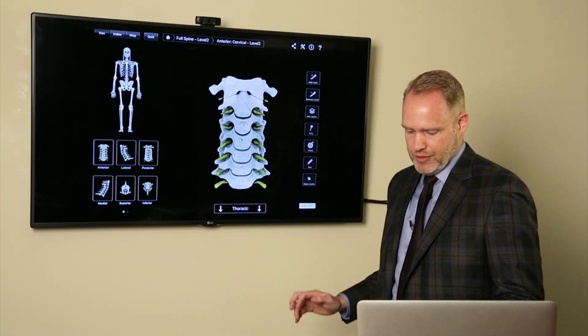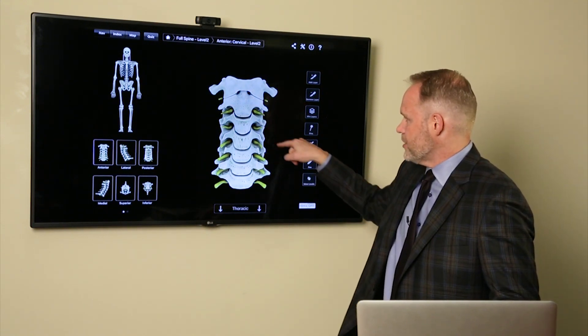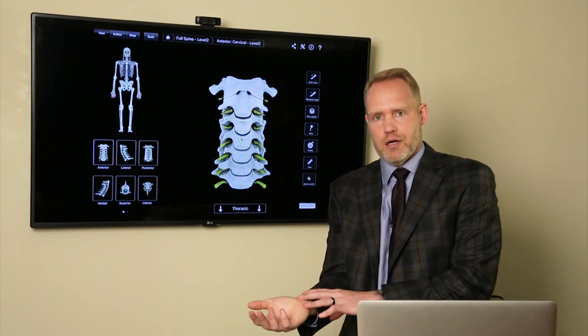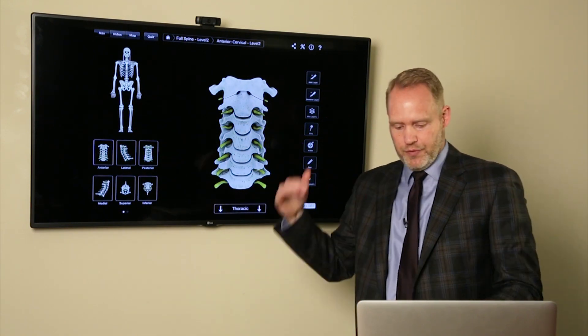And we can add in the nerves. So you can see there's nerves extending out and away at each level, innervating, for example, your shoulders, your arms, your ribs, so on and so forth as you work your way down.